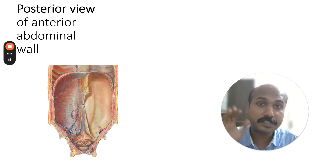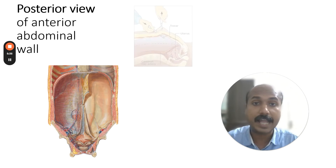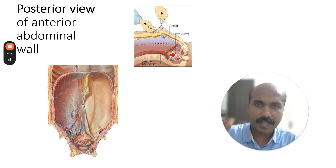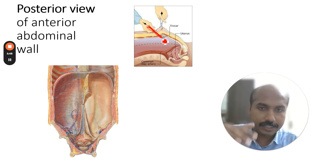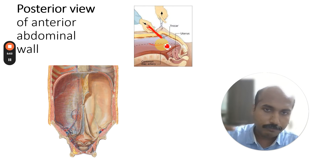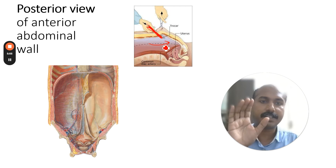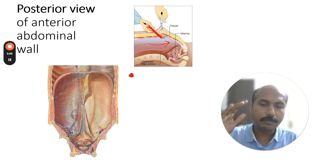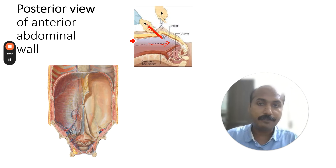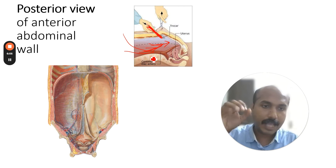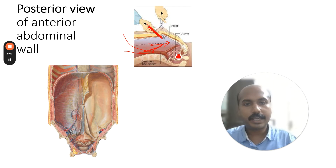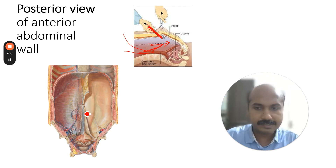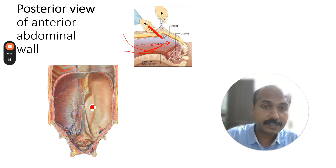These structures are especially important for surgeons, particularly laparoscopic surgeons. In laparoscopy, a trocar is introduced into the peritoneal cavity and a camera is inserted, giving a view of the posterior aspect of the anterior abdominal wall. This is exactly the view through laparoscopic ports, where all three folds and their associated fossae can be identified.